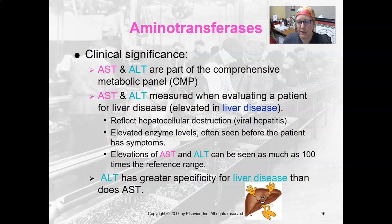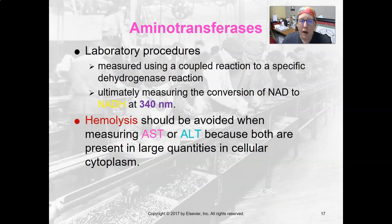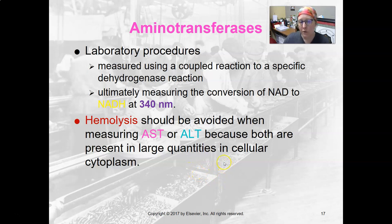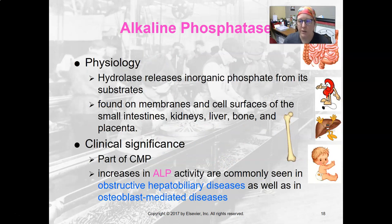ALT has greater specificity for liver disease than AST. Hemolysis should be avoided because AST especially is contained in red cells, but ALT can be also. So if your sample is really hemolyzed, you could get falsely increased AST and some falsely increased ALT.